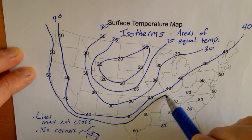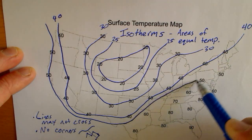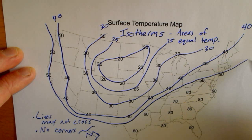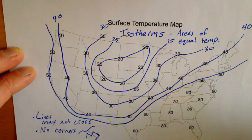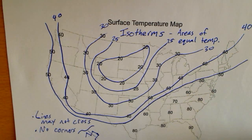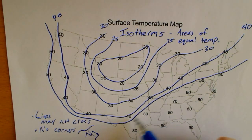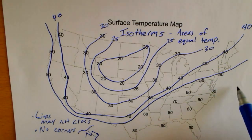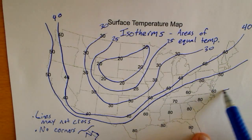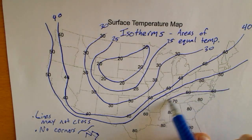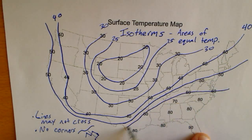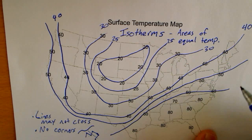Here goes 50, 50 — and there's a 50 in Pennsylvania. That 50 had to make sure it was inside of the 60 line. Now we'll connect the 60s — those are the 60s.